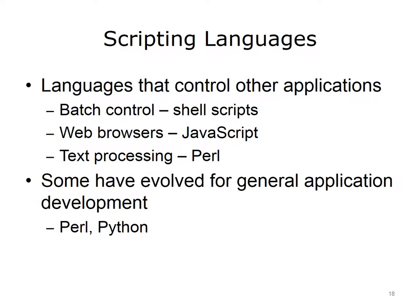Another type of programming language that is often used today is called a scripting language. Originally, scripting languages were developed to program or control other applications. This was necessary for early systems where programs were batched and run at the same time. Shell scripts are the scripting languages that were developed to do this in UNIX environments. JavaScript is an example of a scripting language that works within web browsers to control how a web page is displayed. Perl was created for easy processing of text files. Some scripting languages have evolved to full-fledged application development languages, such as Perl and Python, though they are still referred to as scripting languages because of their origins.